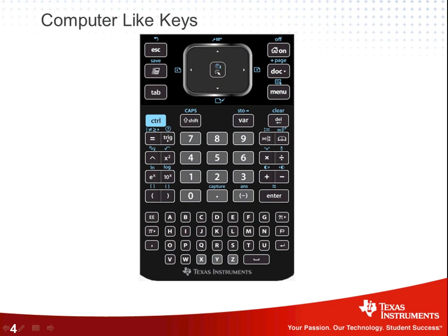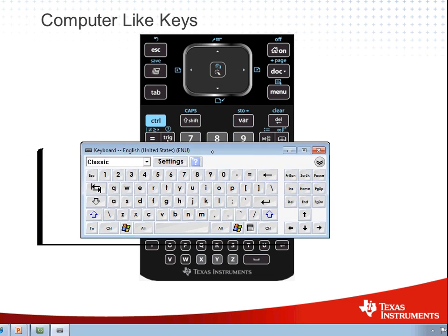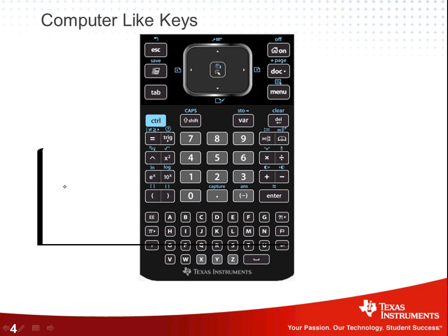Let's take a closer look at computer-like keys. I'm going to pull up a computer keyboard so you can see the various similarities. For example, Escape in the upper right-hand corner — Escape in the upper right-hand corner. Not too far underneath that is Tab. And then there's Shift and Control. Delete is a button, or Backspace. Those are some of the keys I'm going to be pointing out here.